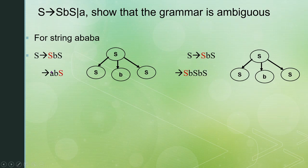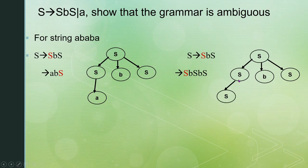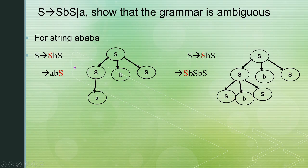Continuing, I select S B S, then S B S B S. Replacing each S with A, we get A B S B S, then A B A B S, and finally A B A B A. The string A B A B A is derived from the grammar using this sequence of steps.